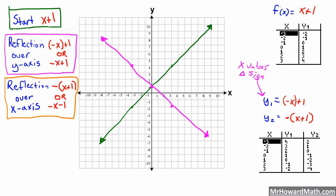Now the next version will be a reflection over the X-axis — this is our orange graph. Notice how we've written this: negative for the whole thing, so negative and then the quantity X plus 1. When we distribute this negative sign inside the parentheses, that becomes negative X, and we also distribute the negative to the positive 1, so it becomes negative 1. So negative parentheses X plus 1 is the same thing as negative X minus 1. Our original line had a positive slope and a positive 1 Y-intercept; now we have a negative slope and a negative 1 Y-intercept.